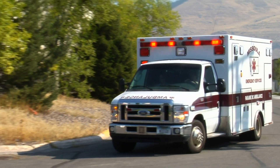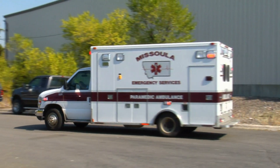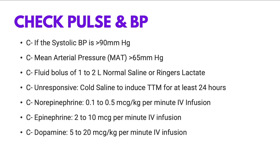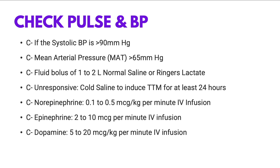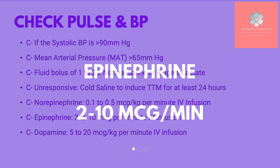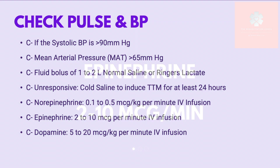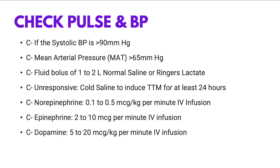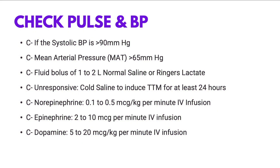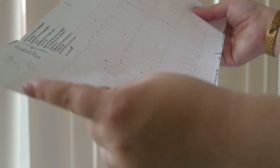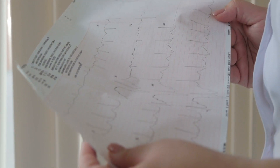We don't yet know whether different methods or devices for temperature control outside of the hospital are beneficial. From a medication perspective, we can consider the following: norepinephrine 0.1 to 0.5 mcg/kg/min, aiming for a minimum systolic blood pressure of 90 mmHg or a MAP greater than 65; epinephrine infusion 2 to 10 mcg/min IV; or dopamine starting at 5 to 20 mcg/kg/min to maintain blood pressure. We should not forget the importance of a 12-lead ECG as soon as possible to identify patients with a possible STEMI who might require PCI.